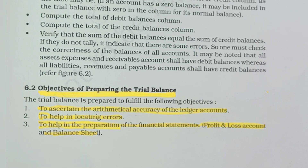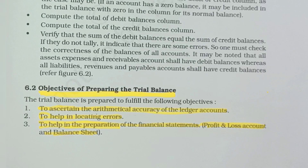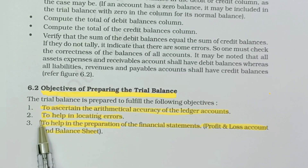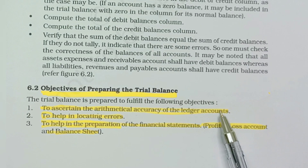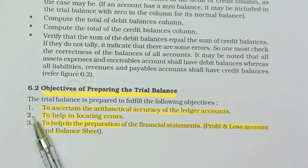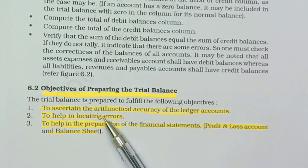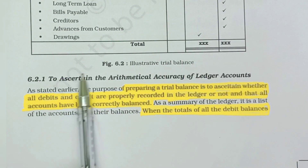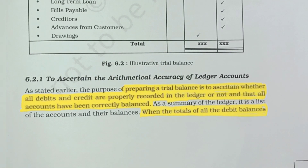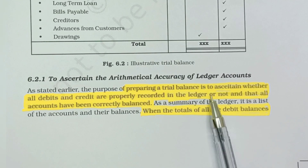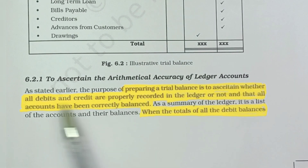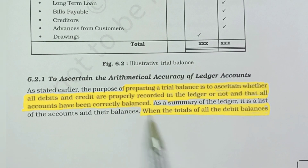The next topic is the objective of preparing the trial balance. The first objective is to ascertain the mathematical accuracy of the ledger accounts. When the trial balance is prepared, we verify that all debit and credit entries in the ledger are recorded correctly and the totals are equal.